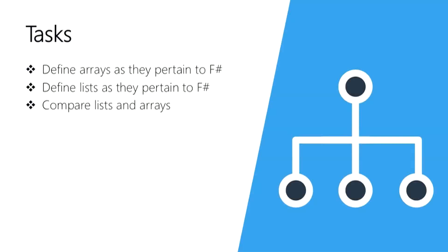Next we'll switch over to lists. Lists are similar to the generic list class you're probably familiar with, but these are not implemented in the same fashion and as a result have some unique capabilities exposed by the F-Sharp language and libraries. And then finally, we'll compare the two approaches and see where you should prefer one over the other.